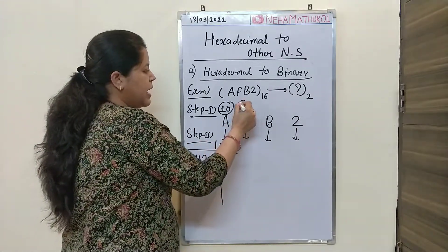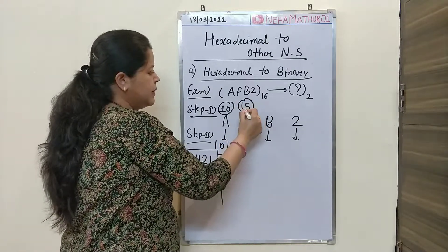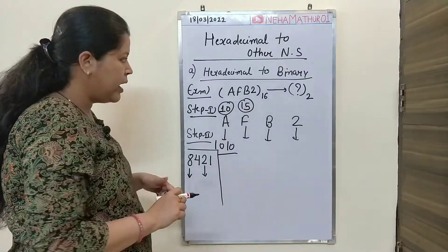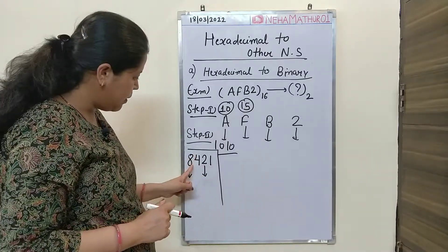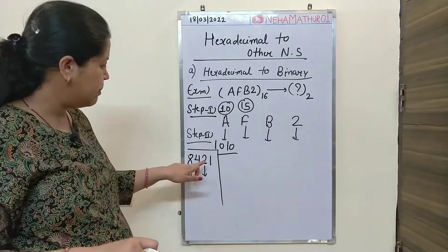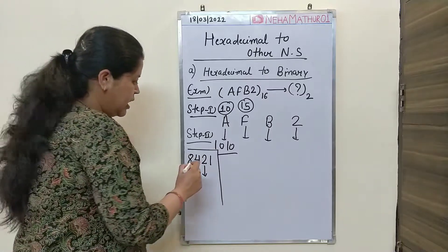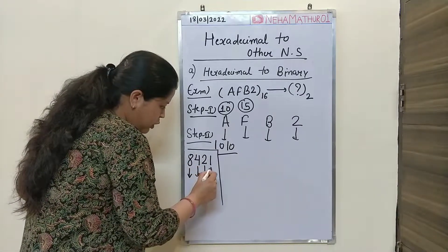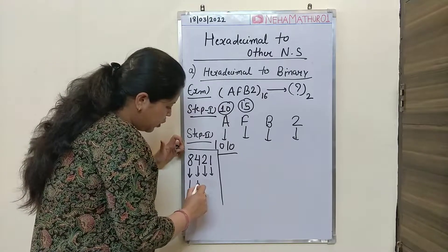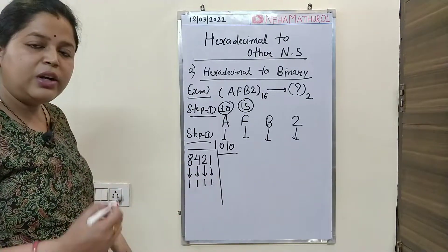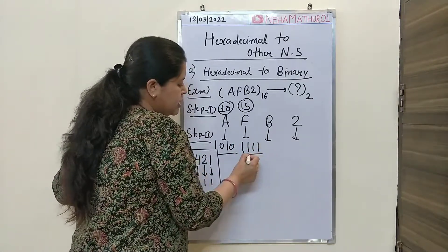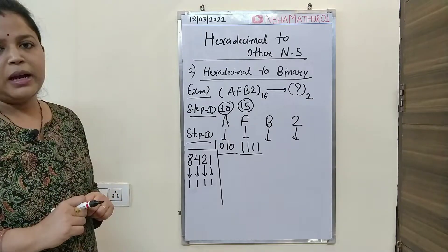Similarly, now I want to convert F. F means 15. Again using the 8421 concept, to get 15 we add 8 plus 4 equals 12, plus 2 equals 14, plus 1 equals 15. All digits are contributing, so all positions are 1. For F, the 4-bit binary equivalent is 1111.